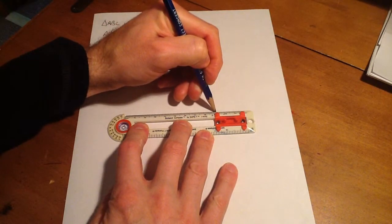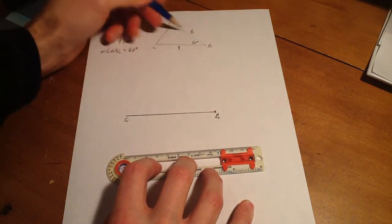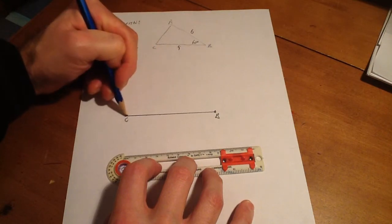This will be B, and this will be C. The sketch up here is rough, but this down here will be my actual scale drawing with the measurements.